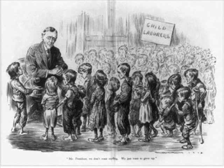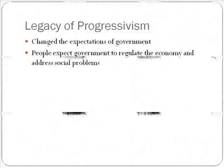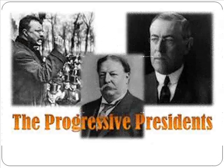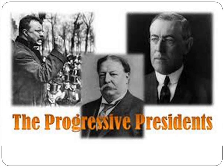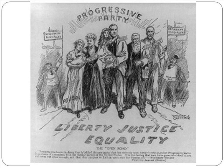Wilson is definitely considered a progressive president for his involvement in these amendments. Other issues Wilson was concerned about include child labor and working hours — he had a lot of legislation and involvement with working conditions and child labor. He also worked on making banks more fair and getting rid of trusts, doing trust busting as well. Wilson had a very similar record to Teddy Roosevelt, and even though he's a Democrat and not a Republican, he continued a lot of those Square Deal programs.